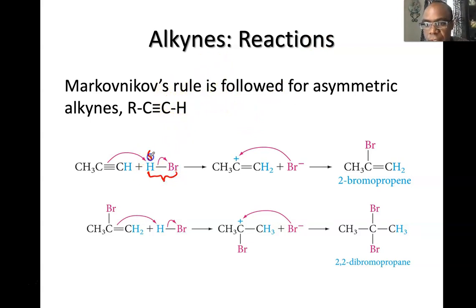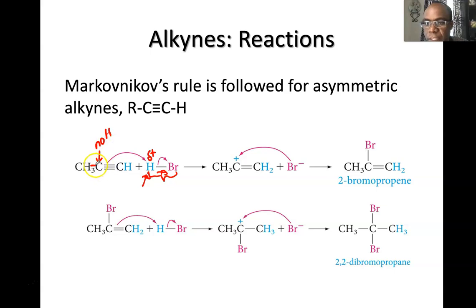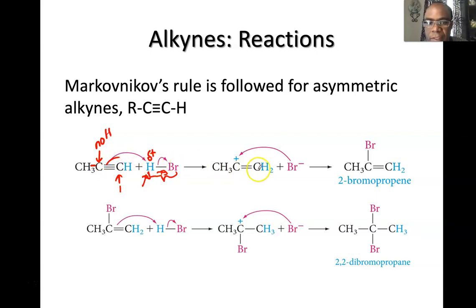There is another reagent — sodium in liquid ammonia (Na/NH3) — that stops at the alkene but gives the trans product. Markovnikov's rule applies in alkyne reactions: when adding a reagent with an electropositive part like HX, the hydrogen ends up on the side of the pi bond that already has more hydrogens. The carbon without any hydrogens receives the halide, while the carbon with one hydrogen gains the second hydrogen, leaving you with one pi bond remaining — a vinyl halide intermediate.